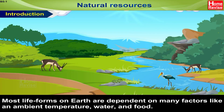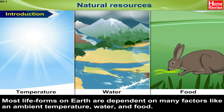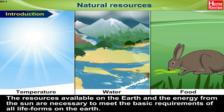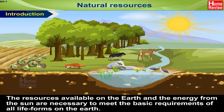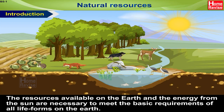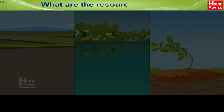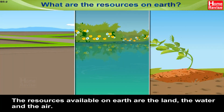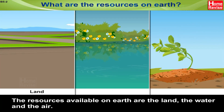Most life forms on Earth are dependent on many factors like ambient temperature, water and food. The resources available on the Earth and the energy from the Sun are necessary to meet the basic requirements of all life forms. The resources available on Earth are the land, the water and the air.